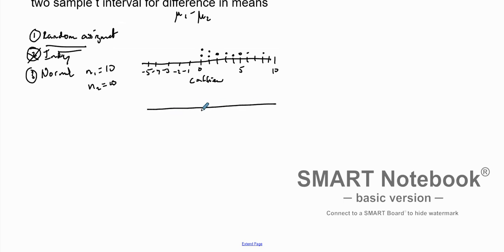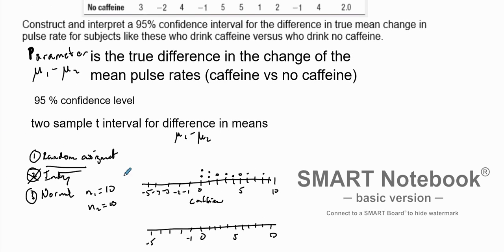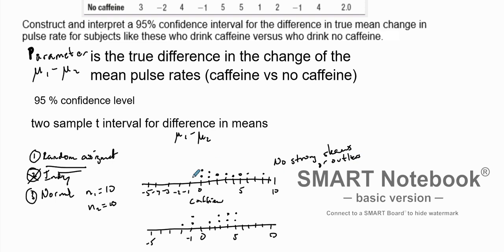We do the same thing for the no-caffeine group. Plotting values: three, negative two, four, negative one, five, five, one, two, and negative one. Definitely not seeing anything suspicious here — no strong skews or outliers. So we're going to say this is approximately normal. So that's how we go about doing that.